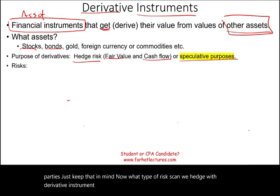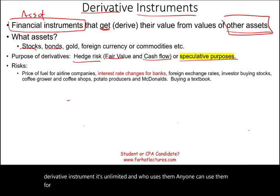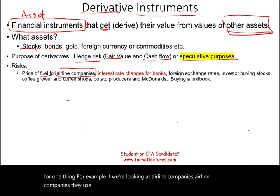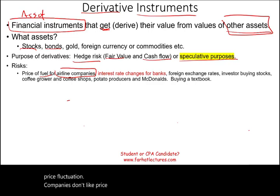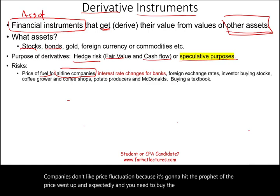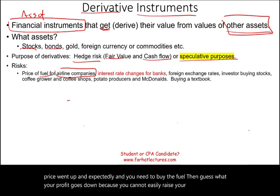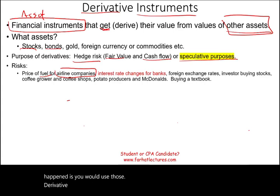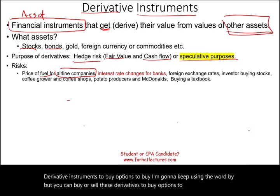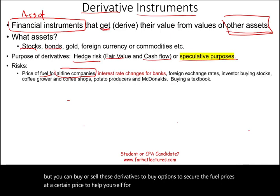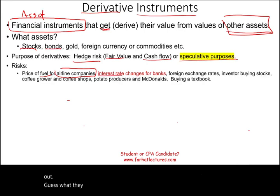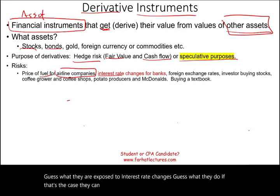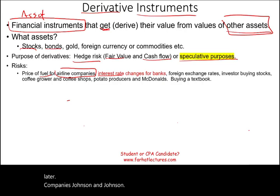What types of risks can we hedge? It's unlimited, and anyone can use derivatives. For example, airline companies use a lot of fuel and don't like price fluctuations — unexpected price increases hit profits. So they use derivative instruments to buy options securing fuel prices at a certain level. Banks lend money and are exposed to interest rate changes, so they can buy something called swaps to hedge that risk.